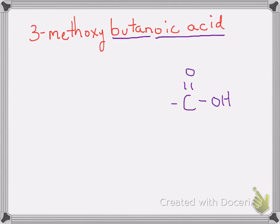How big is that R group? It's a butane derivative, so that means it's four carbons in length. I'll go ahead and add in those four carbons — I'm not adding substituents yet because I don't know what goes on them. Looking further left I see a 3-methoxy group. Let's number our carbons: the number one carbon is the carbonyl carbon — that's automatic in a carboxylic acid — then carbon two, carbon three, and carbon four.